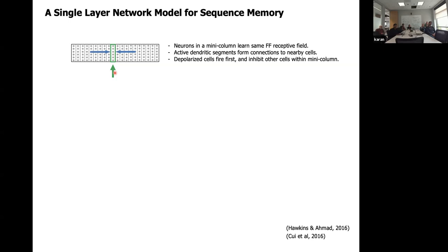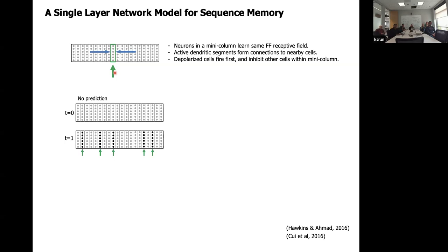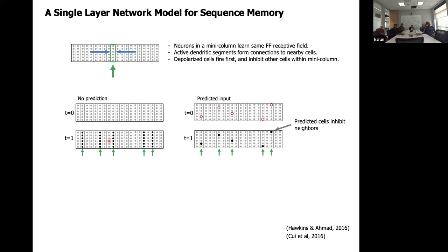When a cell is depolarized, it fires first within the mini-column and inhibits the other cells in the mini-column. If you have those properties plus the learning rules, you get a very powerful sequence memory. Here's an example: when there are no predictions and no depolarized states, and you get some feedforward input, all cells in the mini-column become active because no one is inhibiting anyone else — they all fire at the same time, giving a burst of activity.